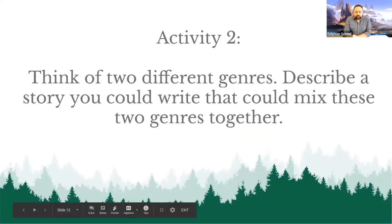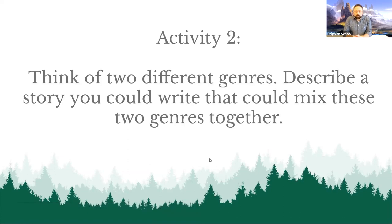Here's your second activity — activity number two. Think of two different genres, and in just a couple sentences or a paragraph, describe a story you could write that mixes these two genres together. You can think of any genres we talked about: science fiction, fantasy, horror, romance, adventure, dinosaur stories, historical fiction, mystery, detective novel, crime novel. Try to smush two of them together and tell us real quickly what a story could be about.